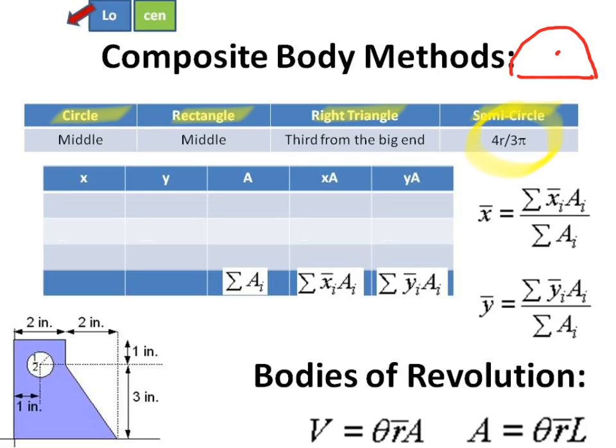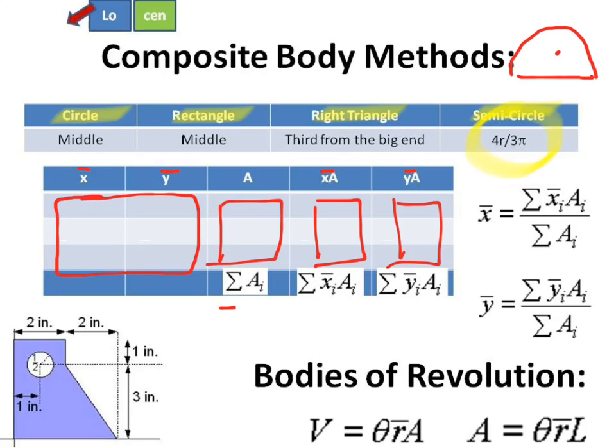Once you have those four memorized, these in your chart, these rows, the x-bar and the y-bar are the coordinates for the centroid of each of your areas. And these are the areas of each of your areas. This is just multiply x-bar times A and y-bar times A. So then you have these three columns, add them up, and divide one column by the sum of the areas and another column by the sum of the areas. That's composite body methods.